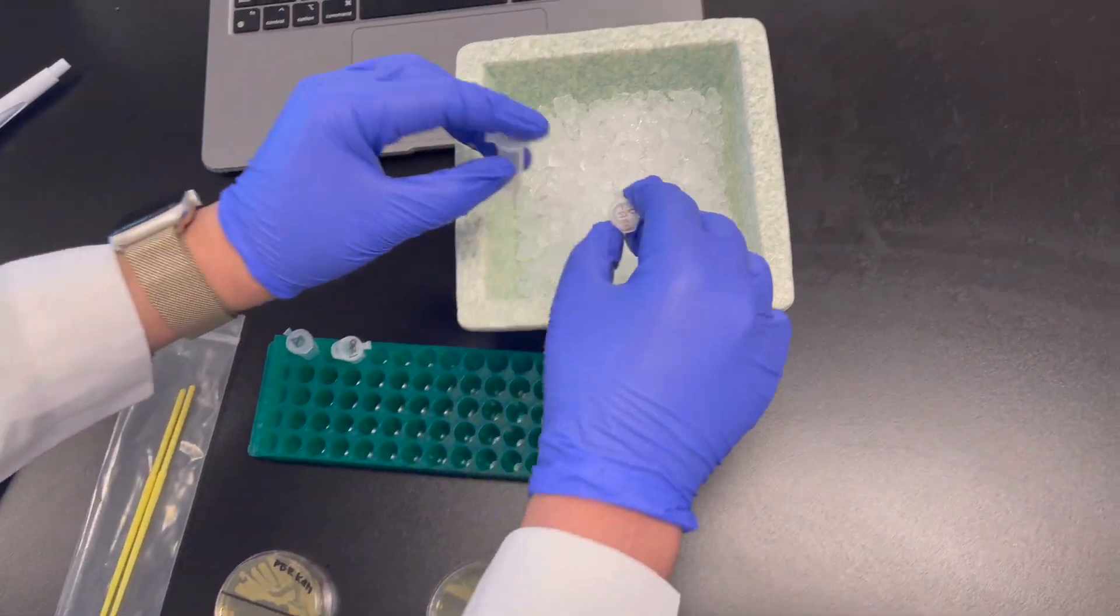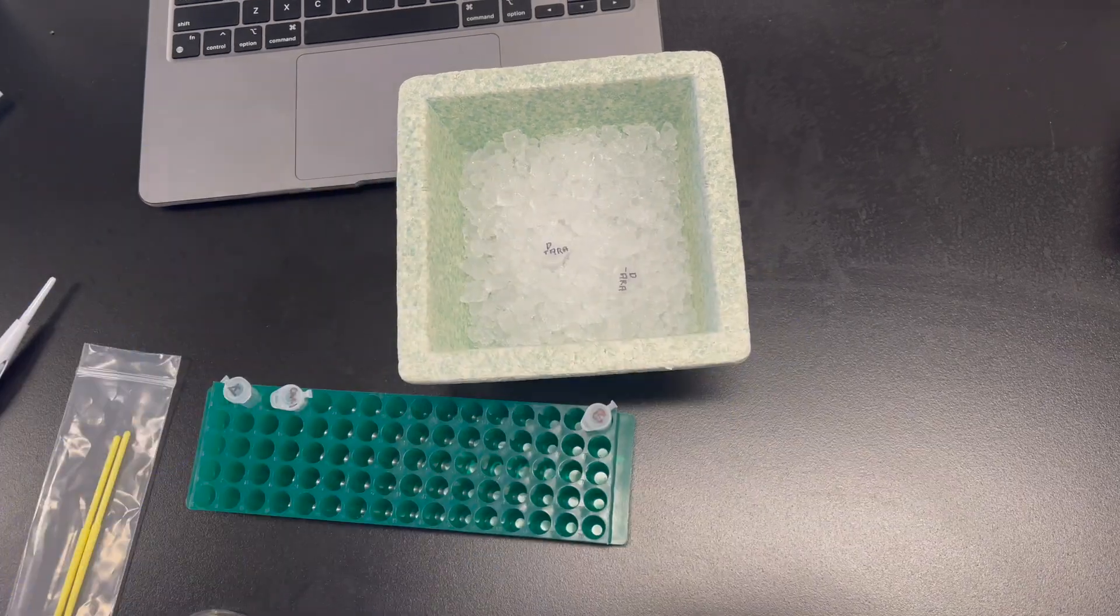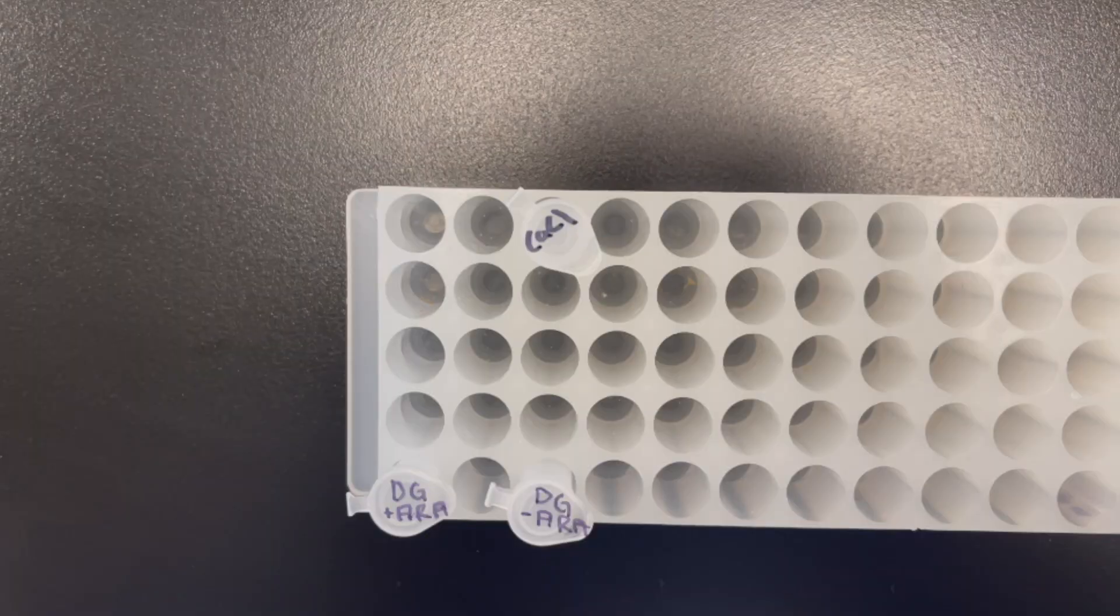Place all tubes with transformation buffer into the ice bath. Although it wasn't shown, make sure to repeat the steps with the DG tubes.